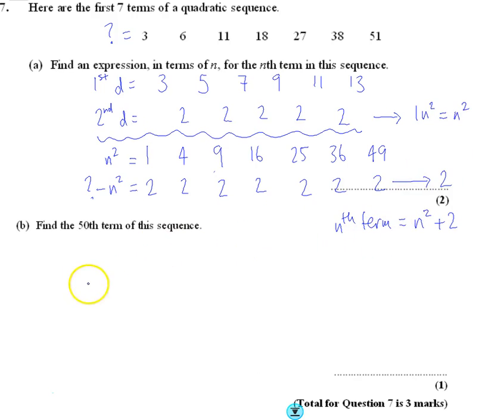Now finding the 50th term. Well, the 50th term is easy. To find the 50th term, the whole point of the nth term is it actually defines anything, so you're going to do 50, you're going to square it, and then you're going to add on 2.